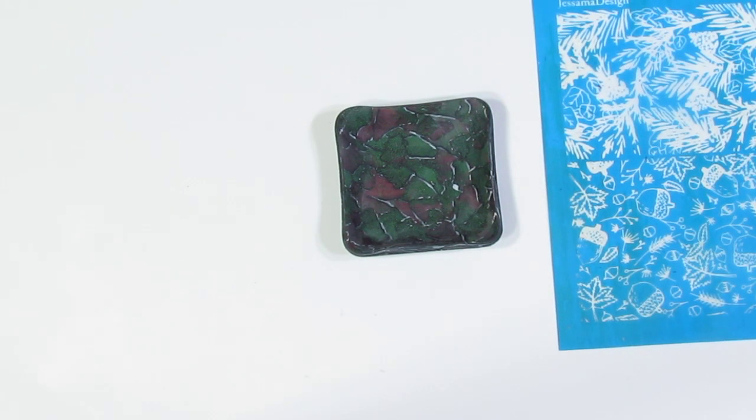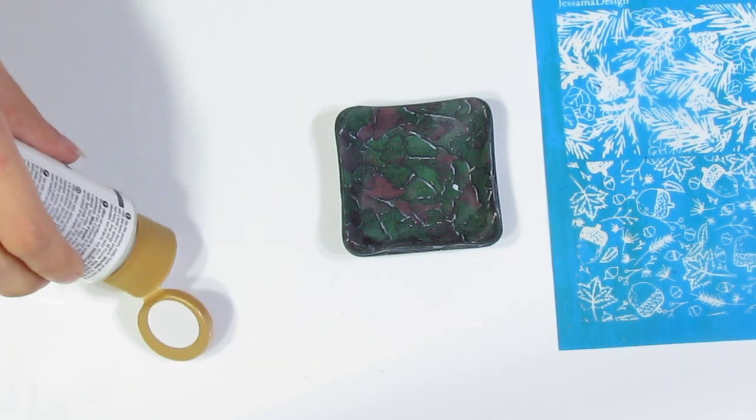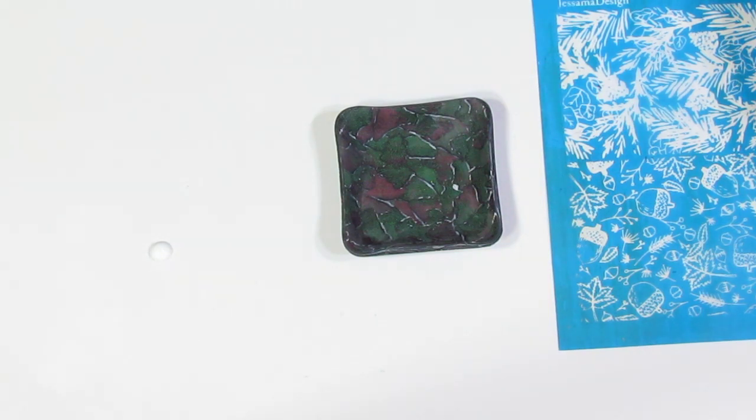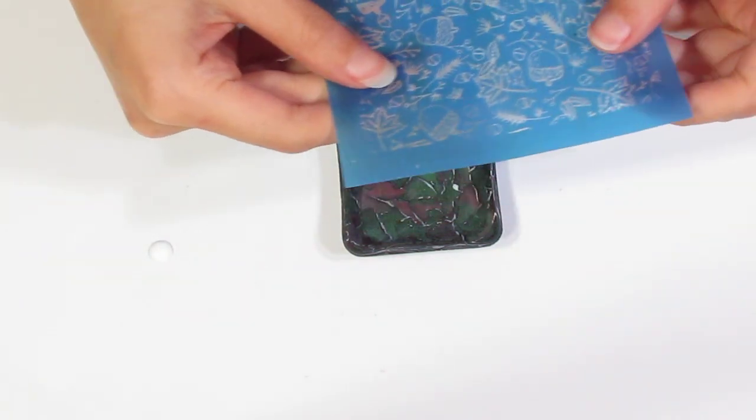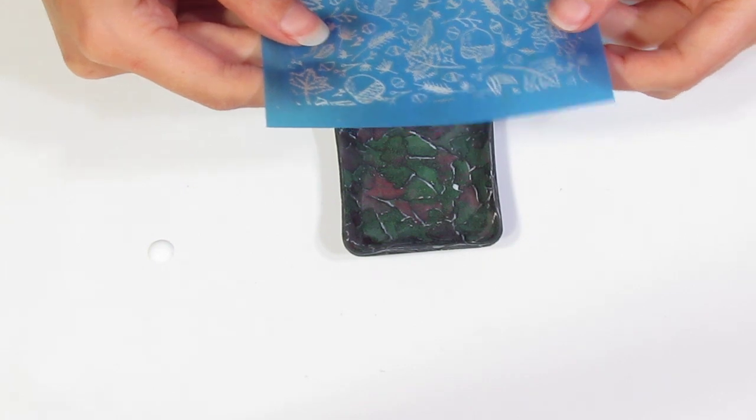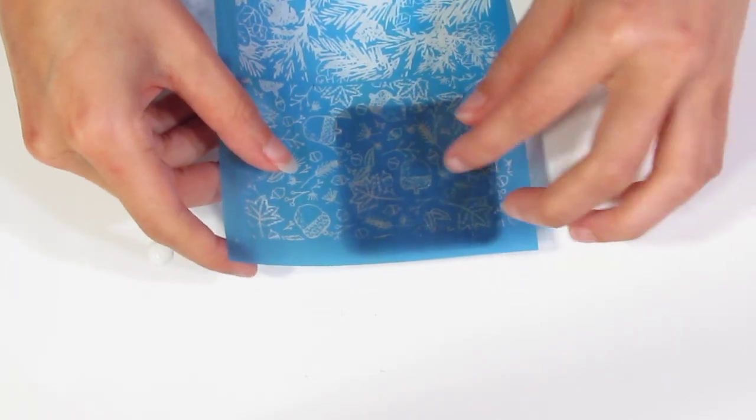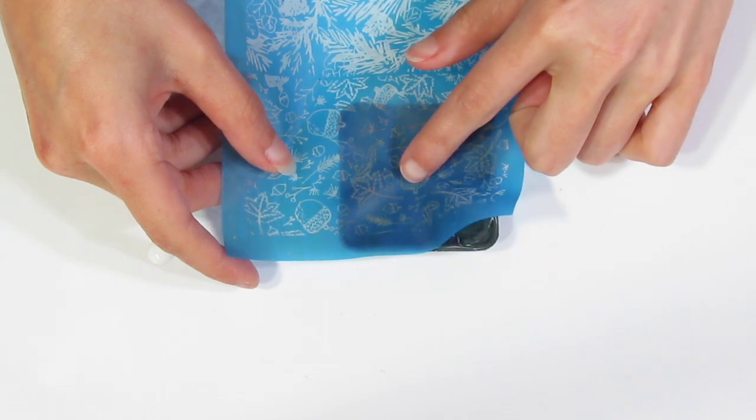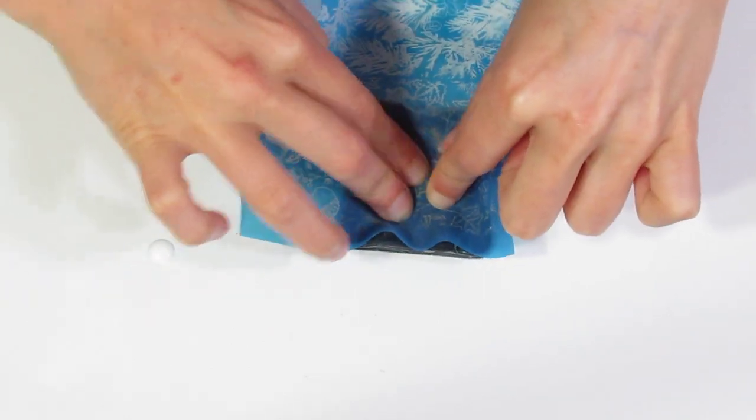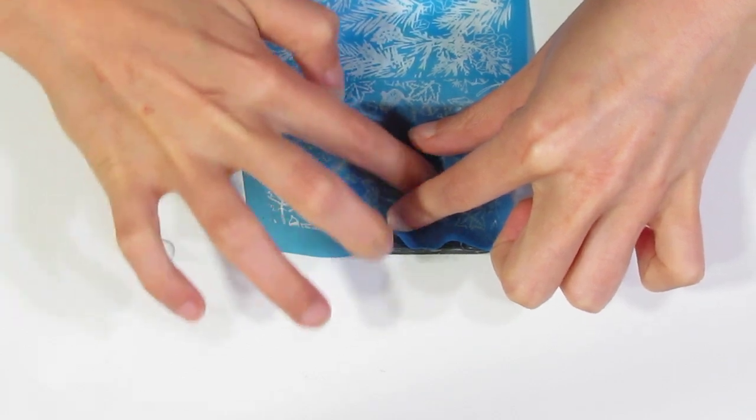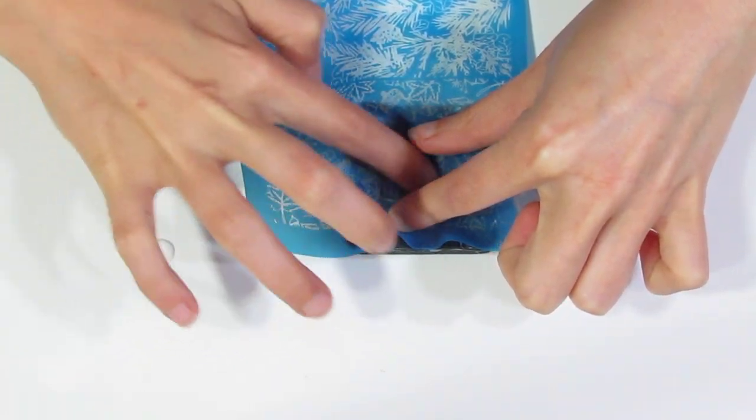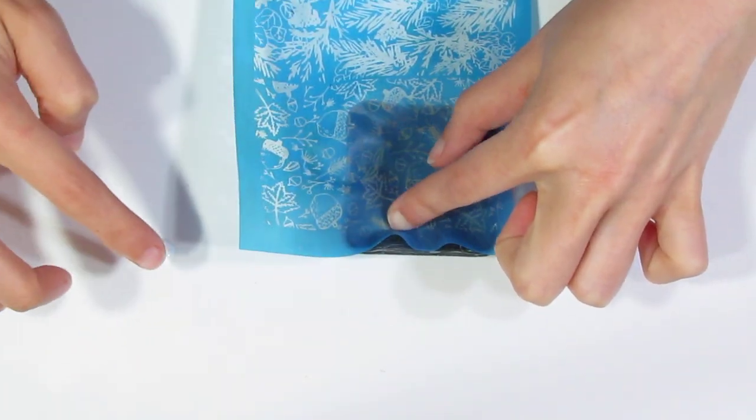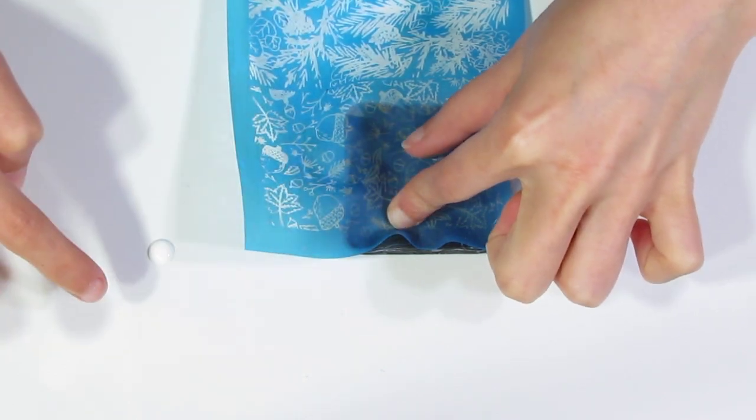So I'm going to take some white paint, a little bit down there. Okay, and then grab the acorn of choice. Position it pretty much in the middle. Burnish it down. Like so.